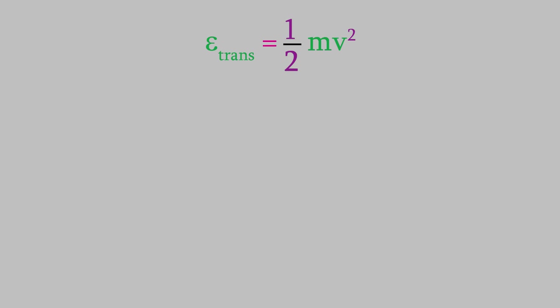Notice that I'm using the symbol lowercase epsilon for the energy instead of capital E. That's because this energy only represents the translational energy and not the rotational, vibrational, or electronic energies. To get the total energy, E, we'd have to add all those together.